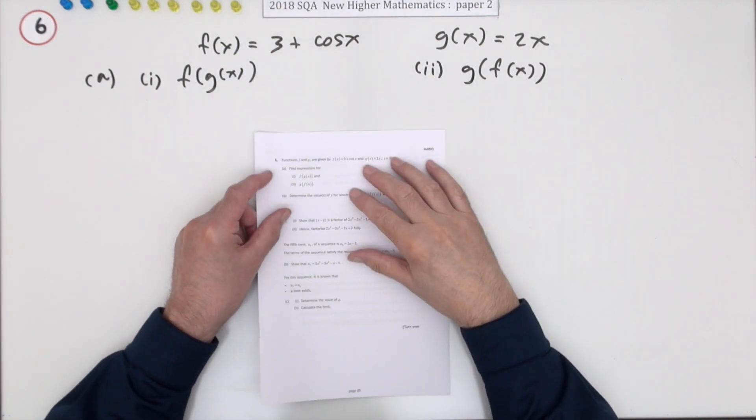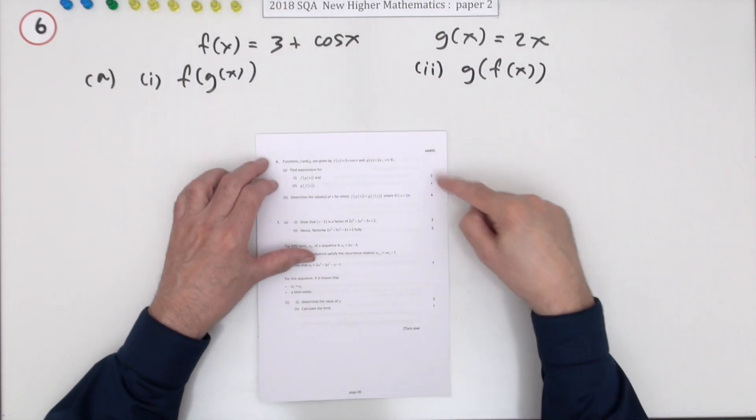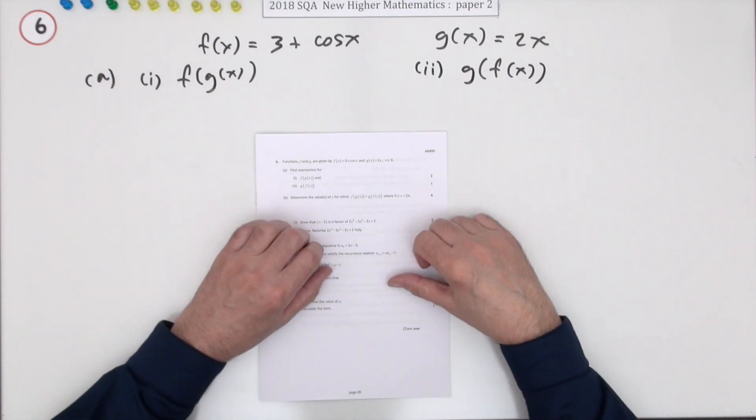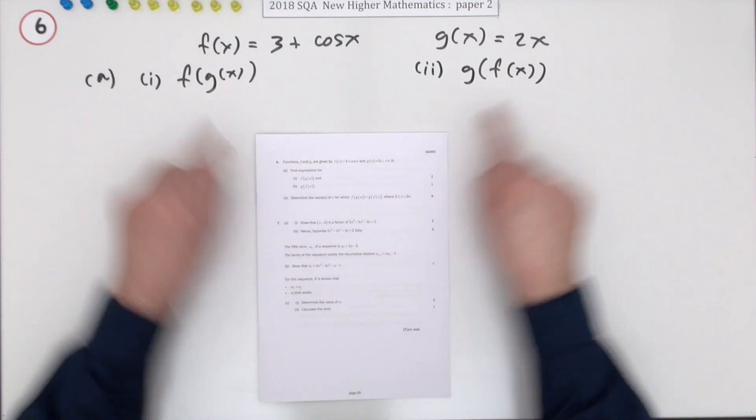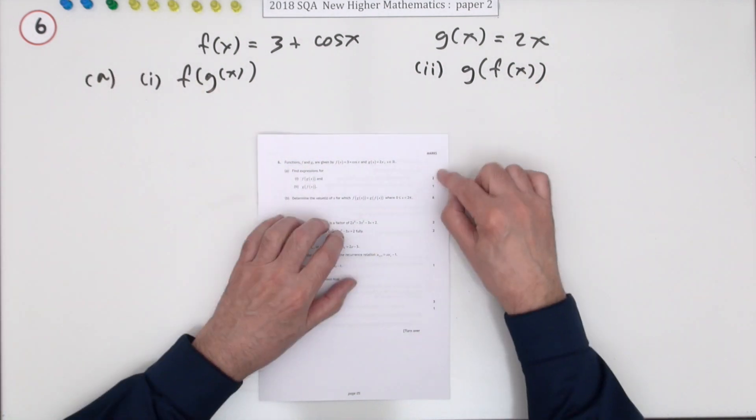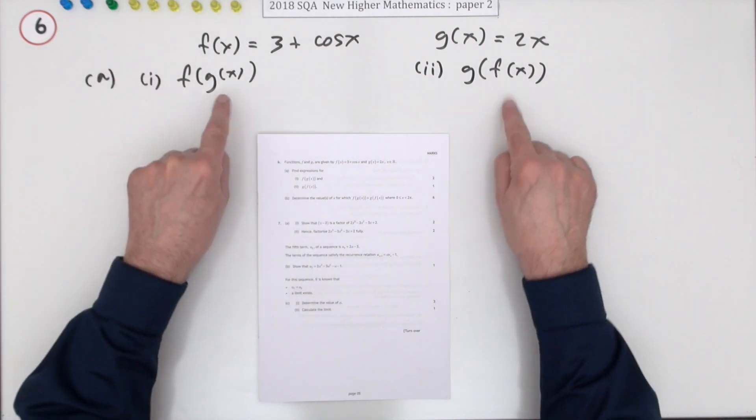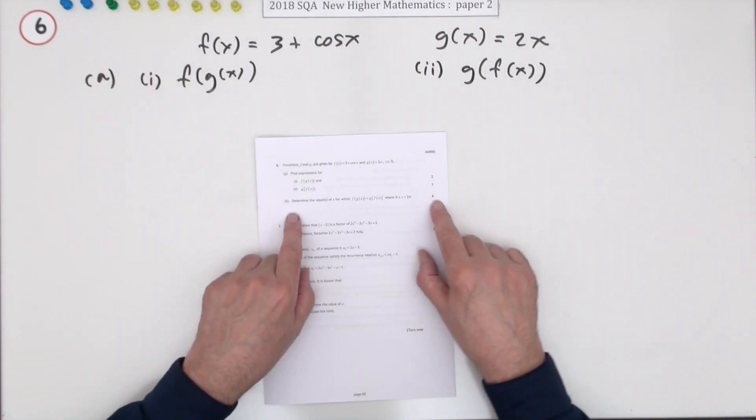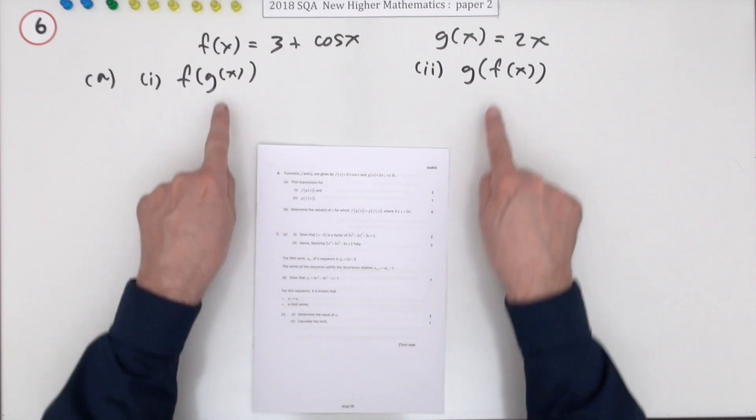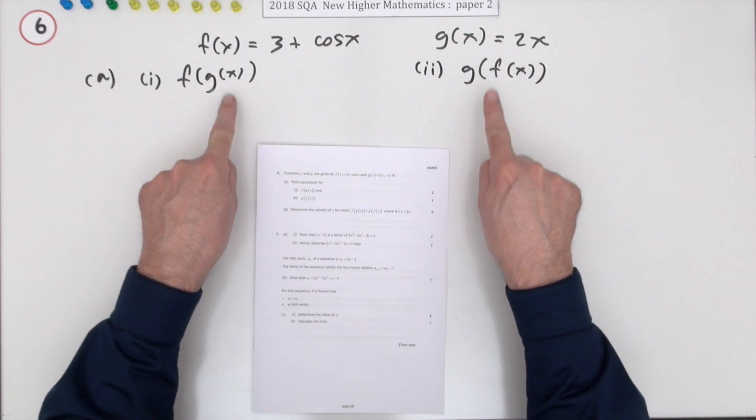Number six from the 2018 SQA Higher Maths Paper 2, a 9 mark question. You can see you've got functions of functions - that should be okay. The first three marks are for getting these two functions of functions.